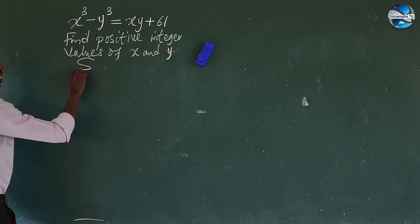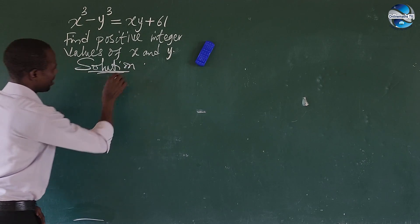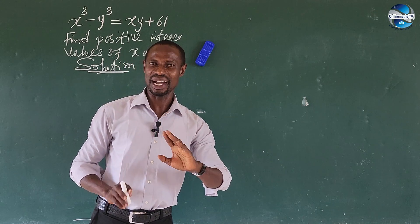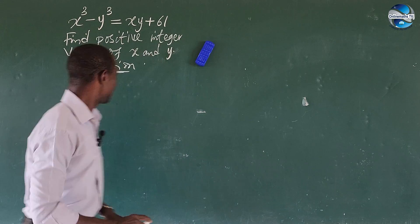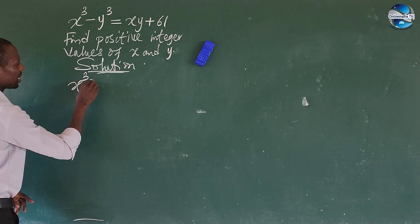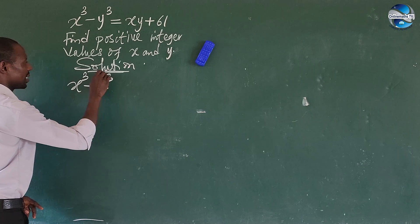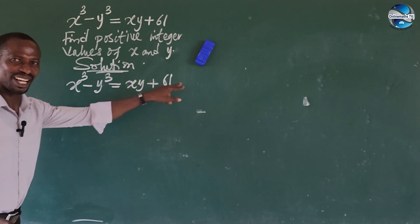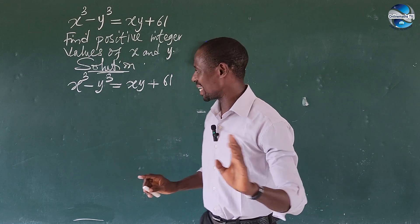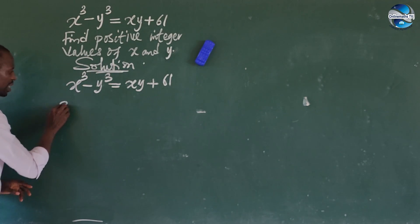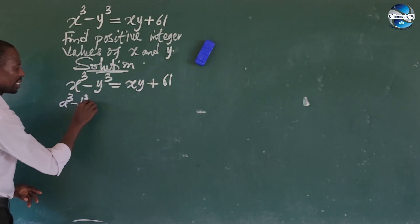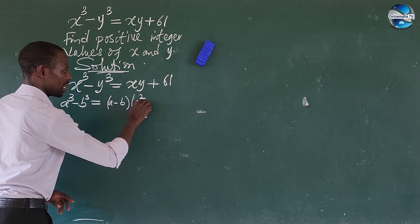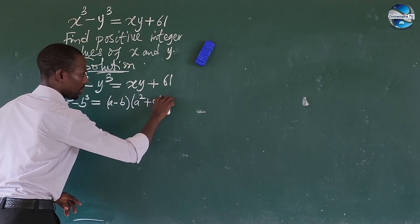The first thing we do is take a solution to this question. I'm working on my handwriting to make it as legible as possible. We put down the question: x³ minus y³ equals xy plus 61. Now we're going to make use of our algebraic identity. We know that a³ minus b³ equals (a minus b)(a² plus ab plus b²).